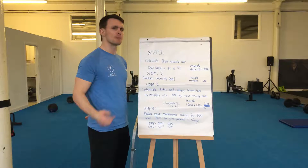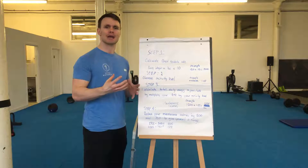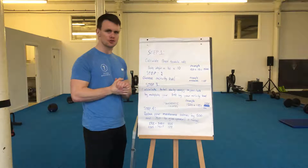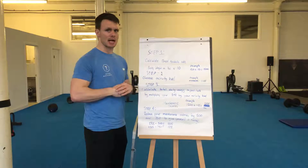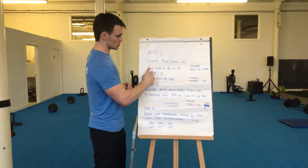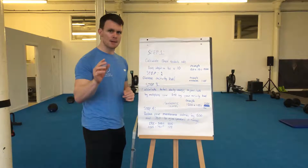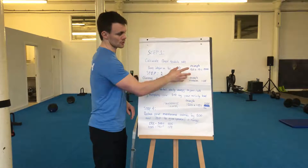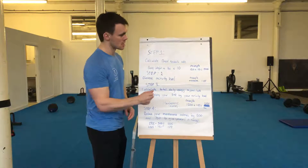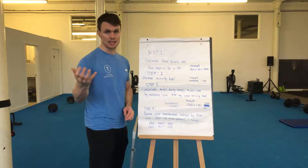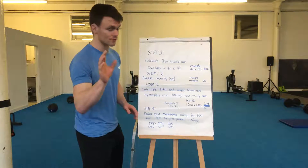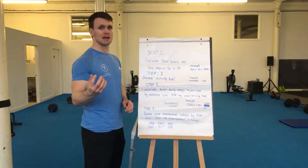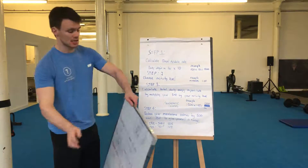Step one is to calculate our Basal Metabolic Rate (BMR). This is how many calories your body burns at rest — if you're doing absolutely nothing at all. We calculate our body weight in pounds and times it by 10. For example, 150 pounds times 10 equals 1,500.